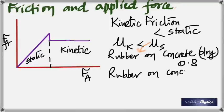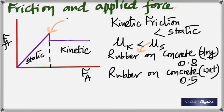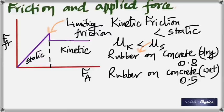Comparing mu_k and mu_s: the values given earlier — 1 and 0.7 — were for static friction, since static friction must be greater than kinetic friction. The kinetic friction values for the same surfaces would be 0.8 and 0.5.